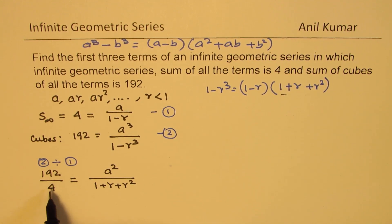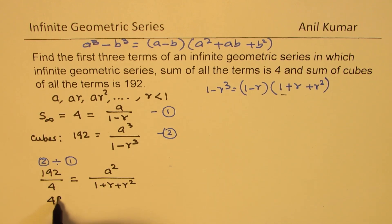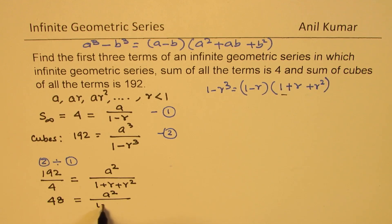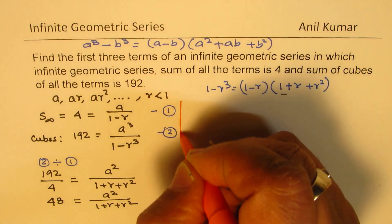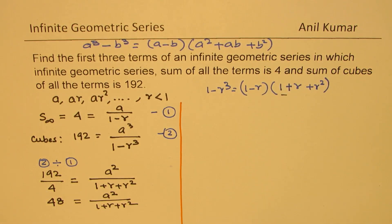We can multiply this, divide this by 4. 4 times 4 is 16. 32 is 8. So 48 is equal to A square over 1 plus R plus R square.